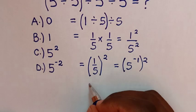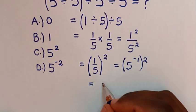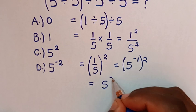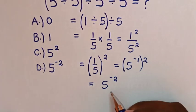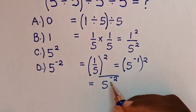Then it will be equal to 5 to the power of negative 1 times 2 is power of negative 2. So this is our final answer.